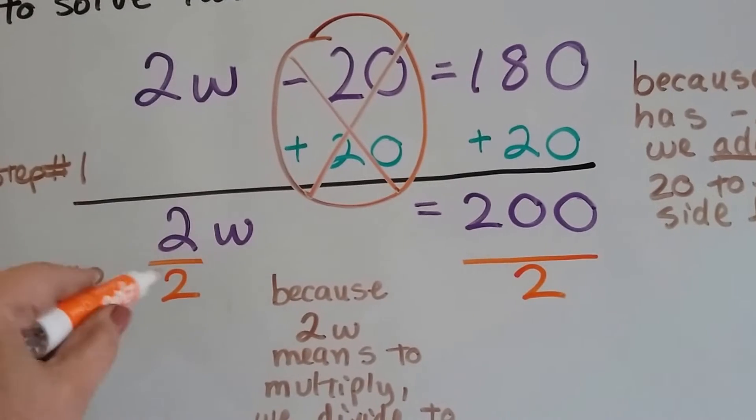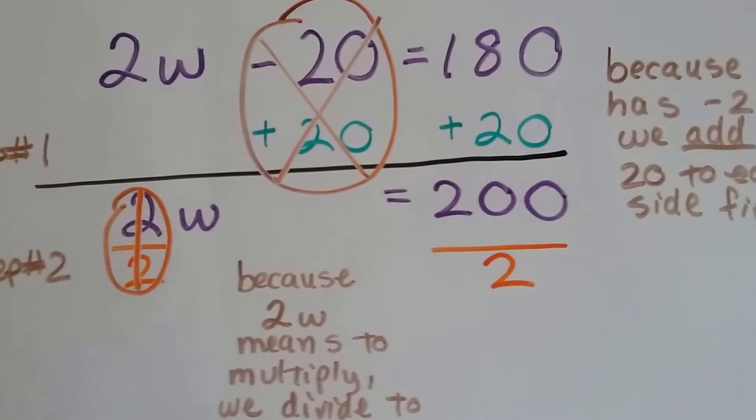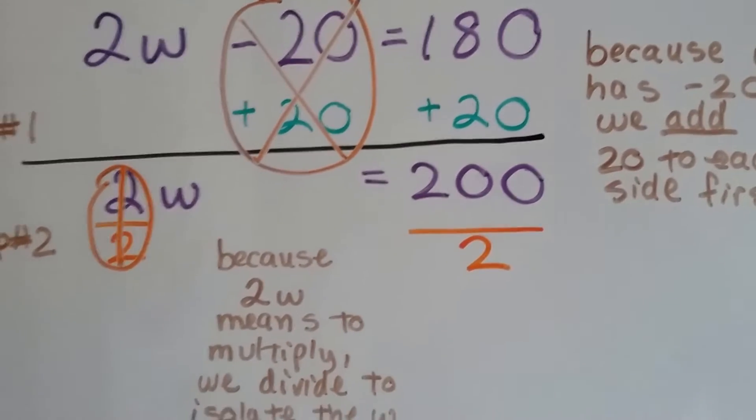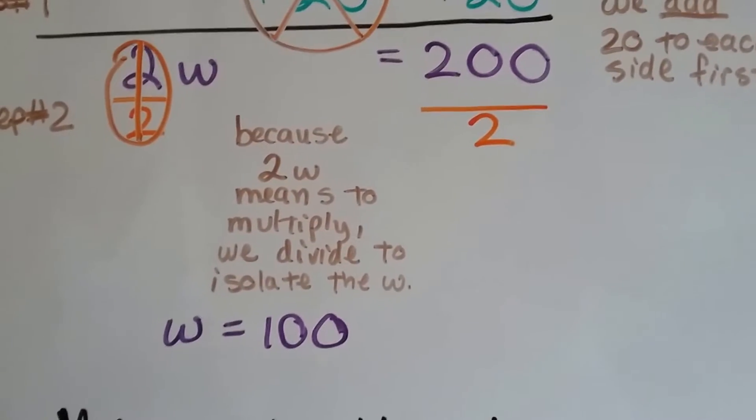2 divided by 2 makes a 1. The numerator and denominator are the same, so that's 1w. 200 divided by 2 is 100. So w equals 100.